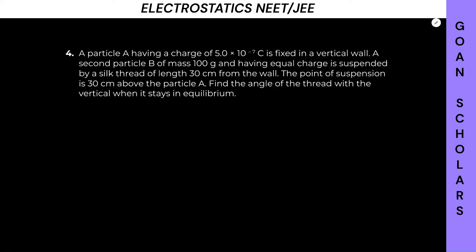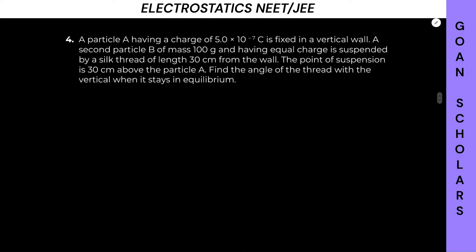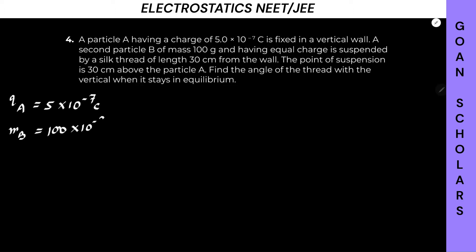A particle A having a charge of 5 × 10⁻⁷ coulomb is fixed in a vertical wall. Let's write what is given first. So particle A has charge QA = 5 × 10⁻⁷ coulomb. It is fixed in a vertical wall. A second particle B has a mass of 100 grams, so let me convert that: 100 × 10⁻³ kg.